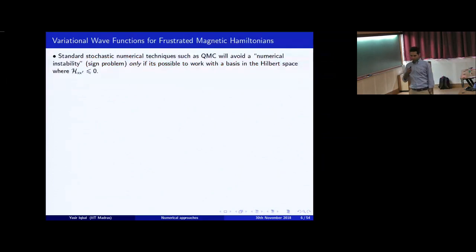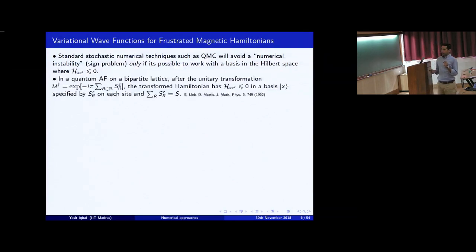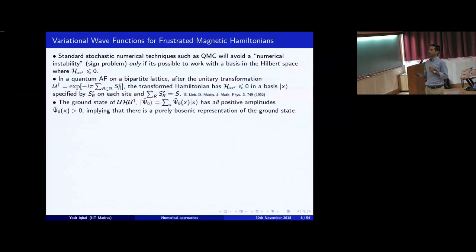The problem in Monte Carlo is that standard stochastic numerical techniques avoid the sign problem only if you can find a basis in which all the off-diagonal elements of the Hamiltonian are non-positive. If you can find such a basis, you can do direct sampling and get numerically exact results. For a quantum antiferromagnet on a bipartite lattice like a square lattice, you can do a unitary transformation U†=exp(-iπ Σ s_z over all B sub-lattice sites), such that the Hamiltonian is transformed to a basis where off-diagonal elements are all non-positive, and you can do Monte Carlo.